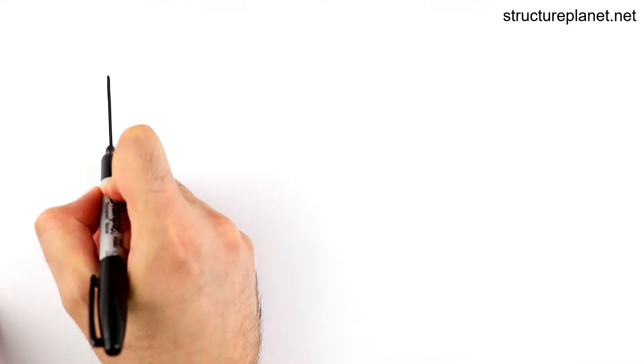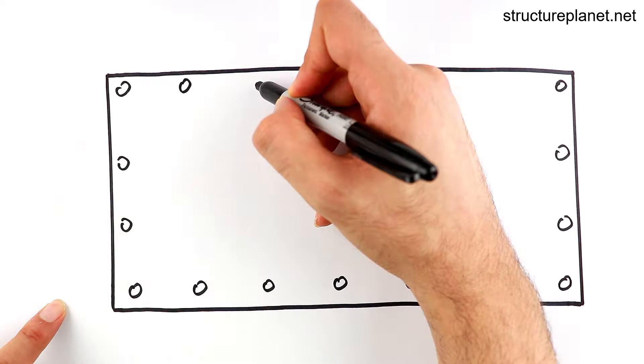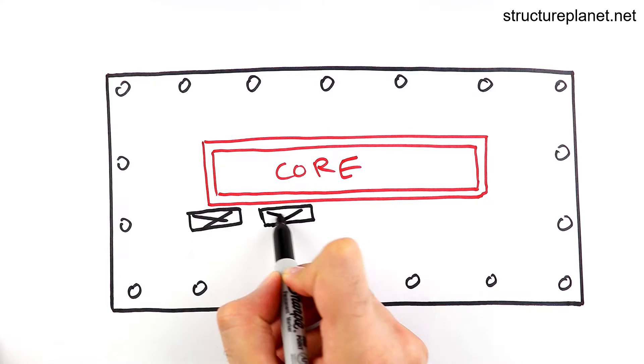Also engineers try to avoid having openings close to the lateral resisting elements. So loads can get into these elements with no disruption.